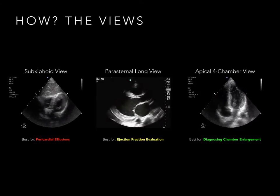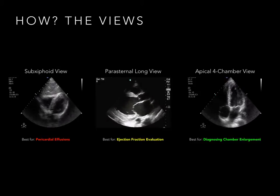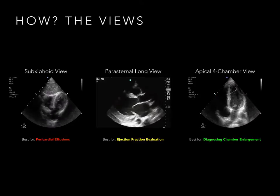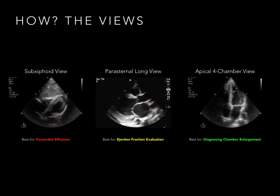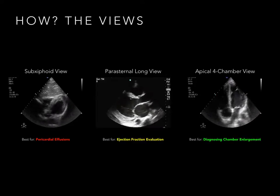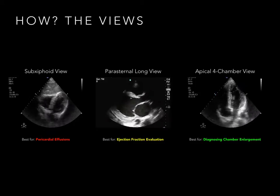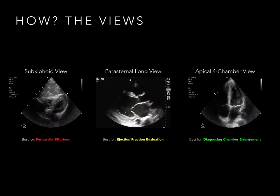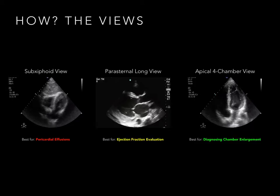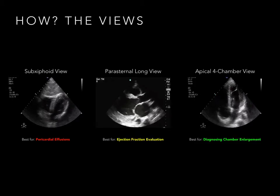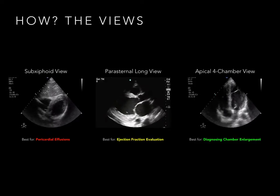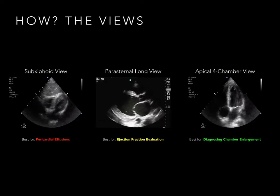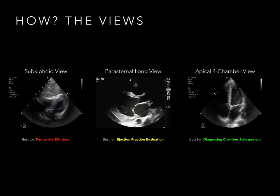ED bedside echo minimally comprises three views: sub-xiphoid, parasternal, and apical 4-chamber. Pericardial effusion, ejection fraction evaluation, and chamber enlargement are best assessed in the subxiphoid, parasternal, and apical 4-chamber views, respectively.